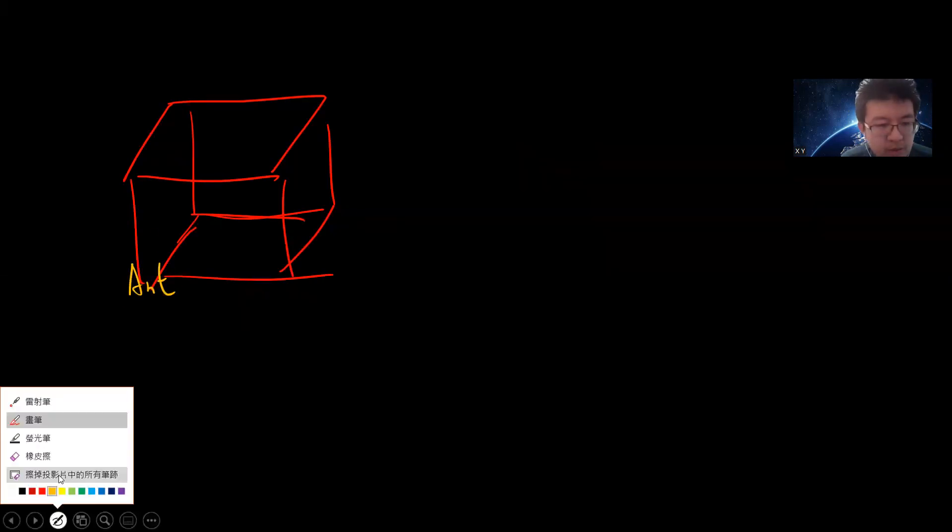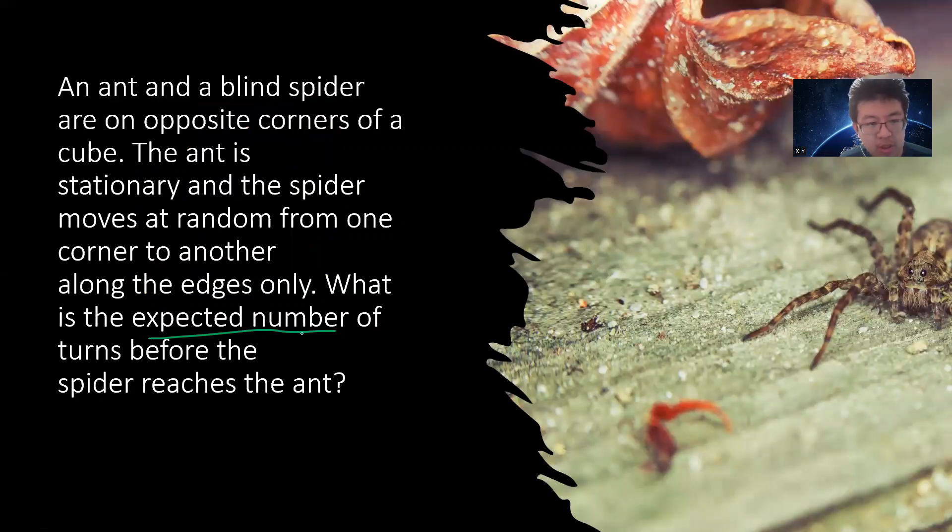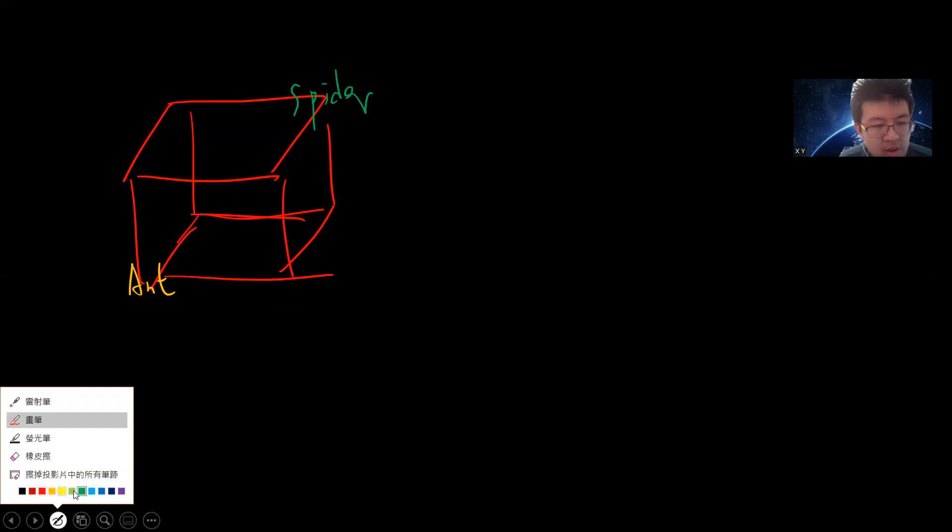So the idea is this. We have a box. Oh by the way, hope you guys subscribe to my channel, and if you want to have more interesting probability or interview questions from the list I built previously, you can click the link below. So the idea is this, we have ants here, and there is a spider. What we are going to do is to find the expected number of turns that spider reaches ant. The ant is stationary, and the spider moves at random.